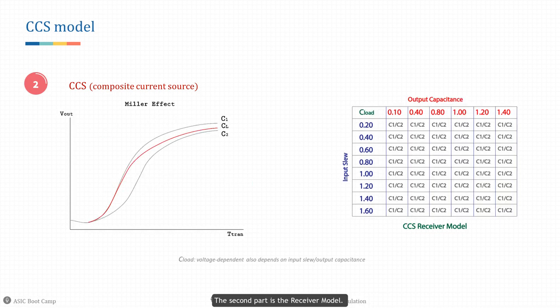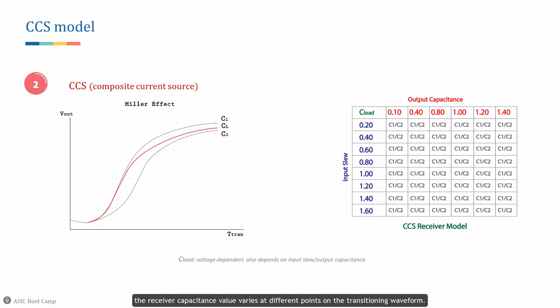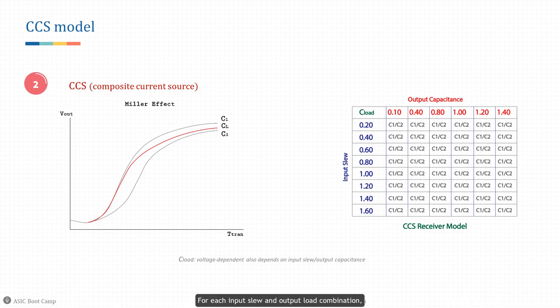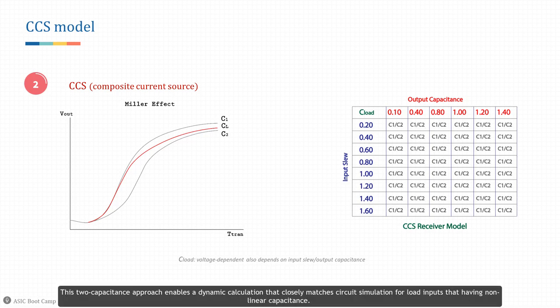The second part is the receiver model. Due to interconnection RC and nonlinear capacitance from the input devices of the load, the receiver capacitance value varies at different points on the transitioning waveform. In the CCS model, this capacitance is modeled differently in the leading portion versus the trailing portion of the waveform. For each input slew and output load combination, the model provides two different values, C1 and C2, to be used for delay calculation. This two-capacitance approach enables a dynamic calculation that closely matches circuit simulation for load inputs with nonlinear capacitance.